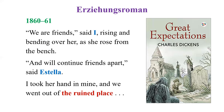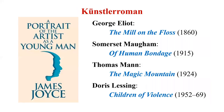Bildungsroman is also called Erziehungsroman (E-R-Z-I-E-H-U-N-G-S-R-O-M-A-N). Examples of Bildungsroman include George Eliot's The Mill on the Floss, featuring Tom Tulliver and Maggie Tulliver; Somerset Maugham's Of Human Bondage; Thomas Mann's The Magic Mountain; and Doris Lessing's Children of Violence — not a single novel but a series. Let me know how many novels are in that sequence.